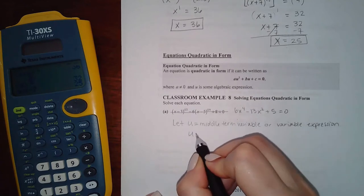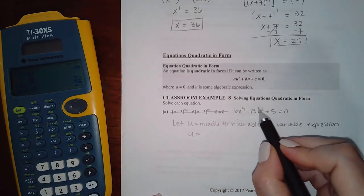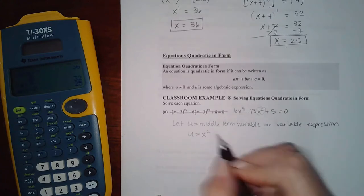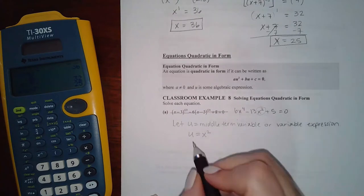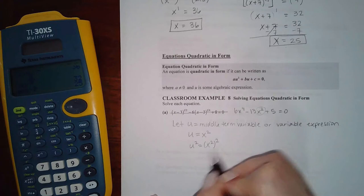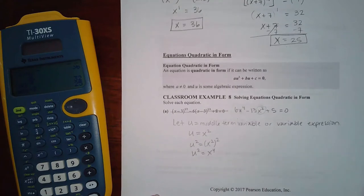So under my problem, I'm going to say, don't want the coefficient, you just want the variable part. I'm going to say u equals x squared. Well, guess what? If I square both sides of this equation, I get that u squared equals x to the fourth. How about that?